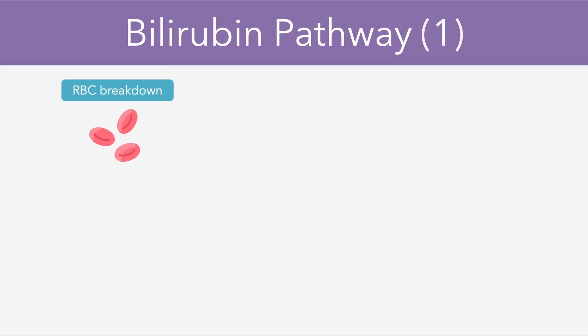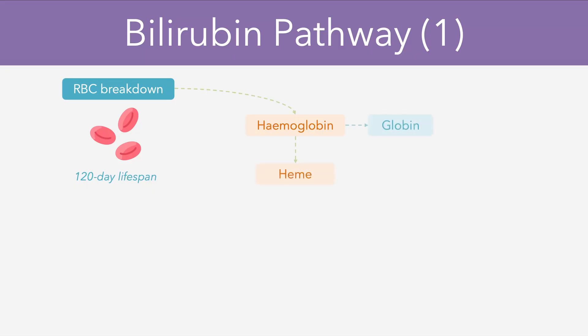Let's take a look at the first step of the bilirubin pathway, which involves direct red blood cell breakdown. Red blood cells have a typical lifespan of around 120 days in the blood before they start to be broken down. As part of this process, the hemoglobin which forms these red blood cells is broken down into heme and globin respectively. The globin molecules are further broken down into amino acids which can be used to build proteins, while the heme is converted into bilirubin and eventually into unconjugated bilirubin.